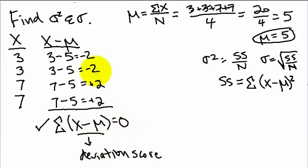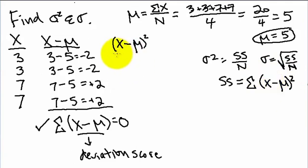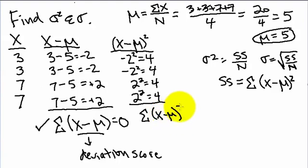Because the sum of the deviation scores equals 0, we need another step. We're going to find (x minus mu) squared. Taking each value: negative 2 squared equals 4, negative 2 squared equals 4, positive 2 squared equals 4, and positive 2 squared equals 4. These are the squared deviation scores. Summing them: 4 plus 4 plus 4 plus 4 equals 16.